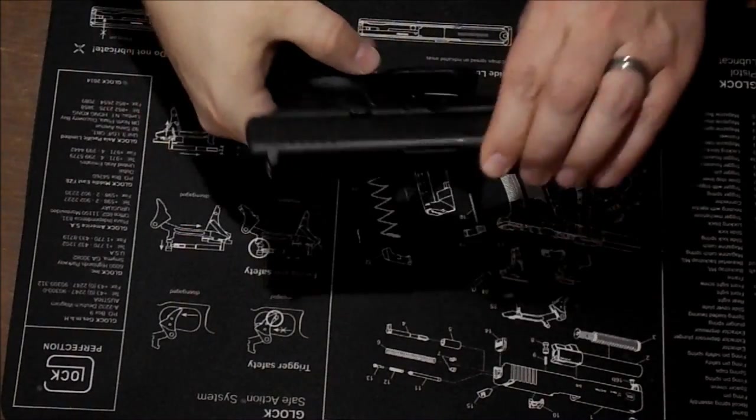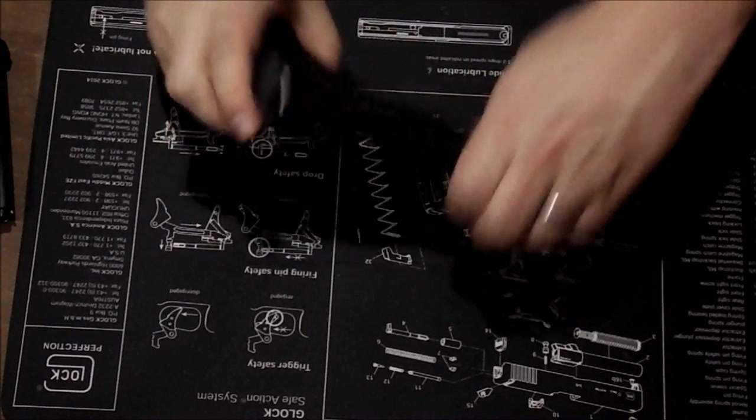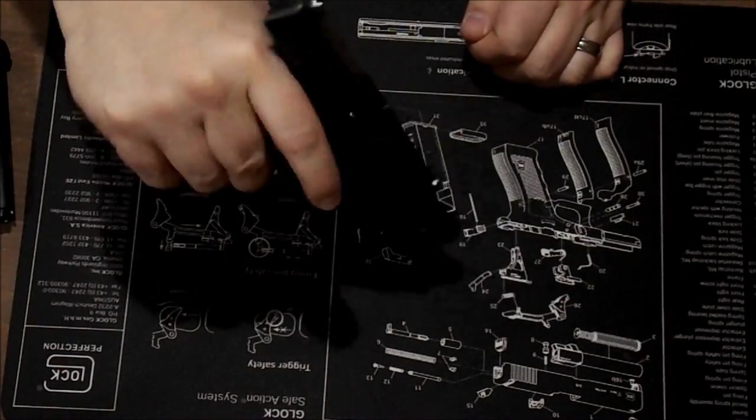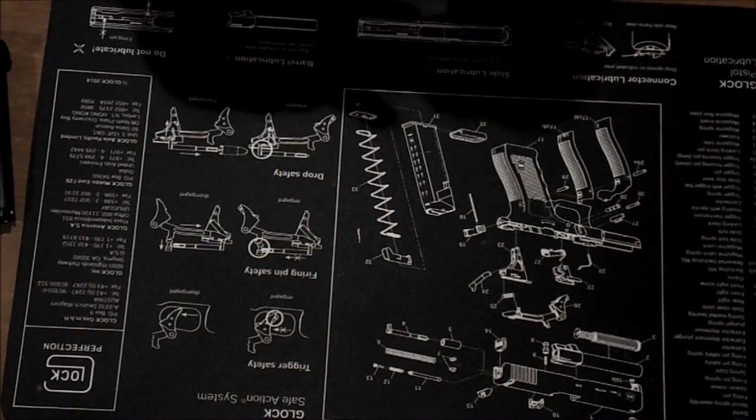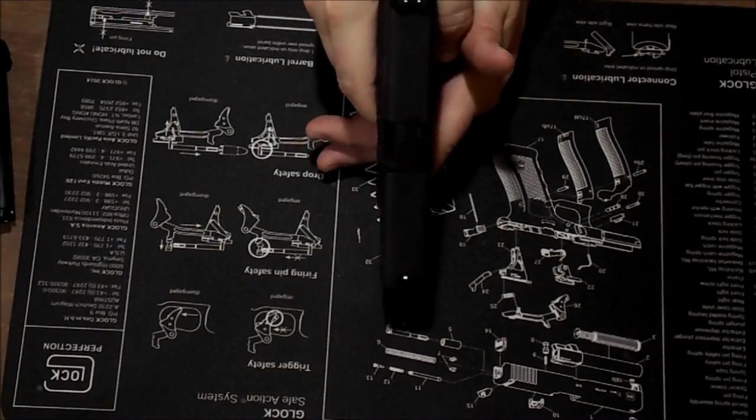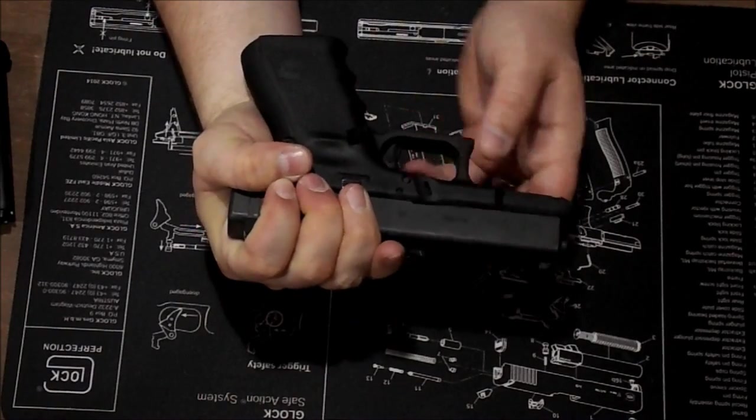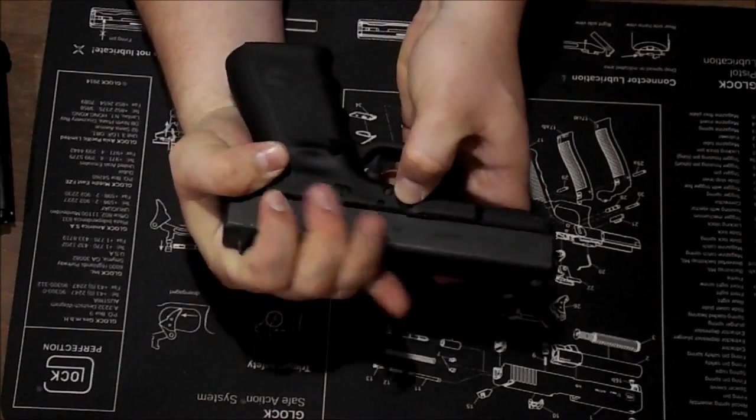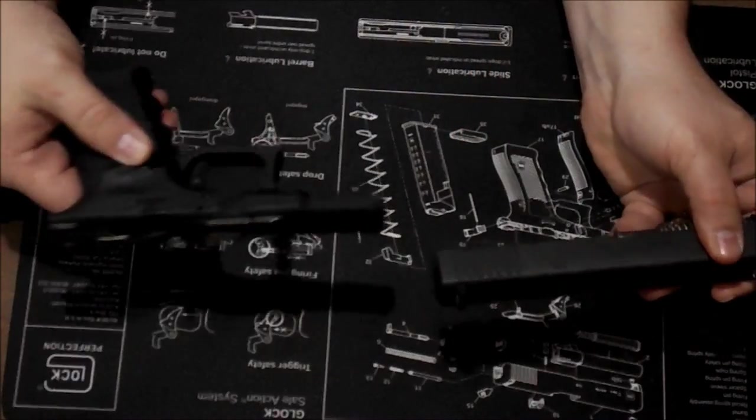We're going to start by unloading the firearm. Empty magazine. Firearm is empty. As always, once you make sure the firearm is empty, double check. Hold it in a safe direction. Going down, pull the trigger. Pull the slide back just a little bit. Pull down on the takedown pins on either side, and then just pull the slide off.